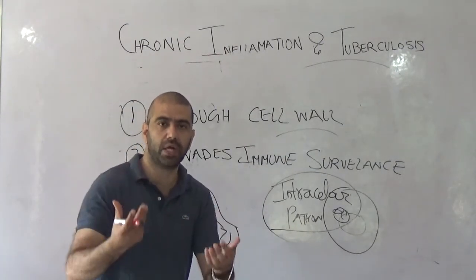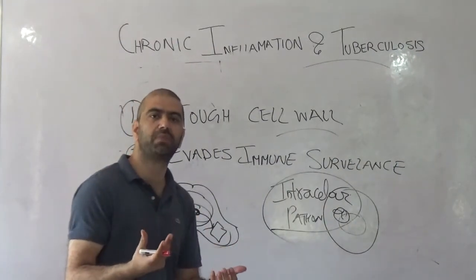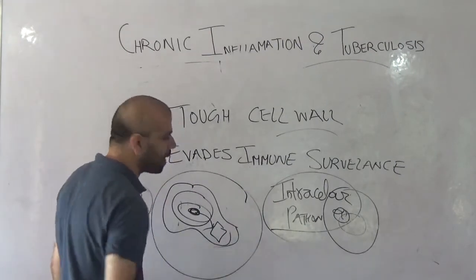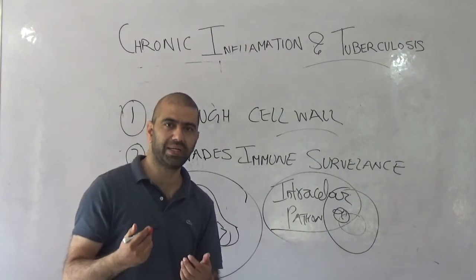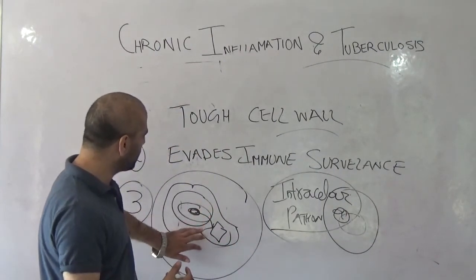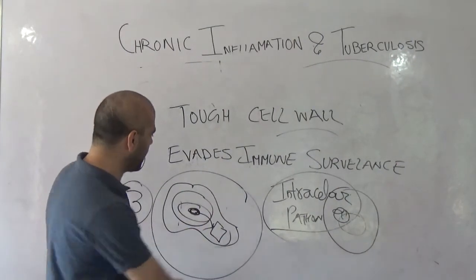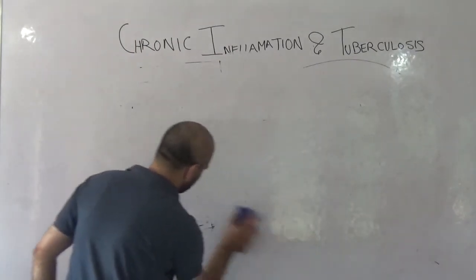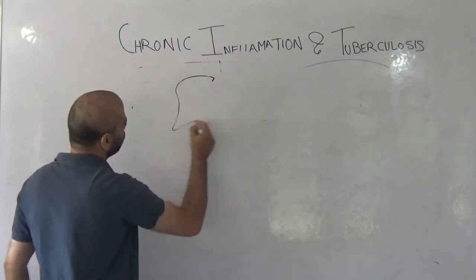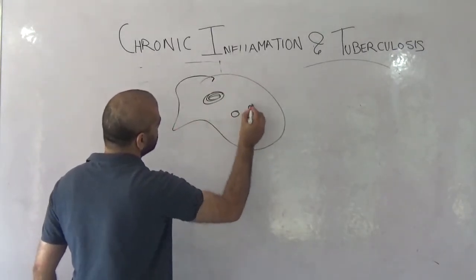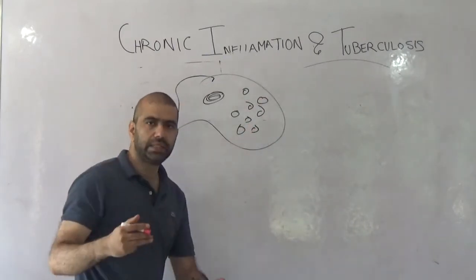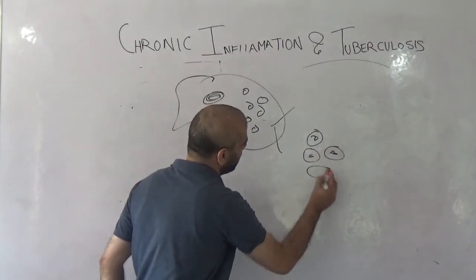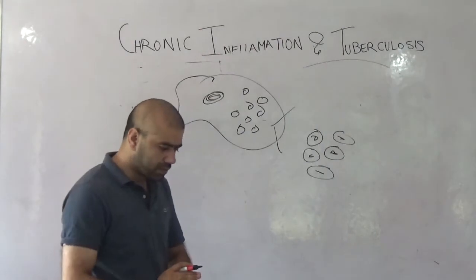The mycobacterium remains within the macrophage, and even the reactive oxygen species produced by the macrophage are not able to defend against it. The bug remains within macrophages for a very long time, multiplying inside. Since it prevents phagosome-lysosome fusion, it makes many copies of itself, ultimately damaging the macrophage. When the macrophage releases the mycobacterium bacilli, they can infect other cells.